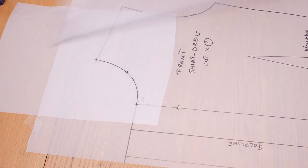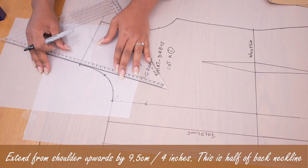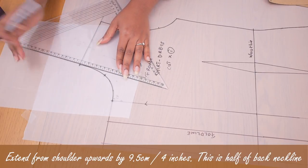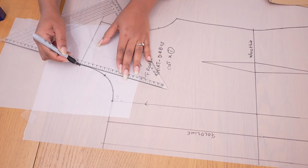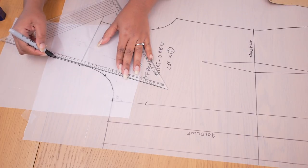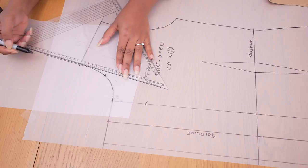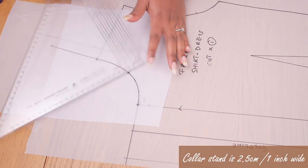Once that is done I'm going to go ahead and extend from the shoulder upwards by about 9.5 centimeters or 4 inches and this is half of your back neckline. So whatever half of your back neckline is, is how much you would extend from the shoulder point upwards.